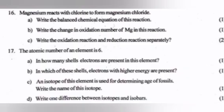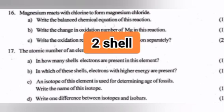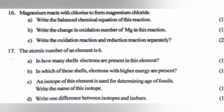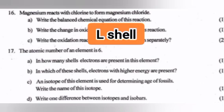Question 17: The atomic number of an element is 6. A. In how many shells are electrons present in this element? Answer: 2 shells. B. In which of these shells are electrons with higher energy present? Answer: L shell.